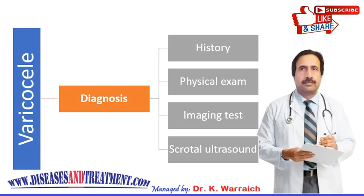Your doctor will also perform an ultrasound of the testicles. This helps to measure the spermatic veins and allows your doctor to get detailed and accurate images of the condition. Once the varicocele is diagnosed, your doctor will classify it into one of three clinical grades — labeled grades 1 to 3 according to the size of the varicocele, where grade 1 is the smallest and grade 3 is the largest.